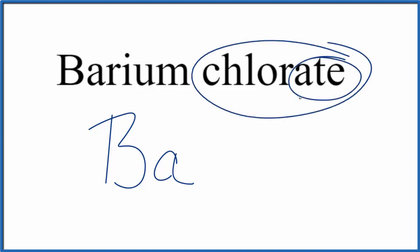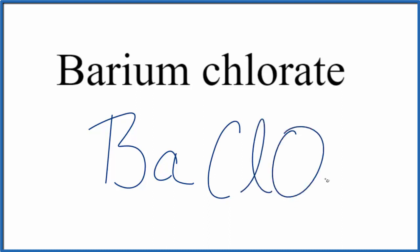For chlorate here, this ATE, you won't find that on the periodic table. That's because it's a polyatomic ion. So you either memorize the chlorate ion as ClO3, the whole thing has a 1- ionic charge, or if you're allowed, you look it up on a table of polyatomic ions.